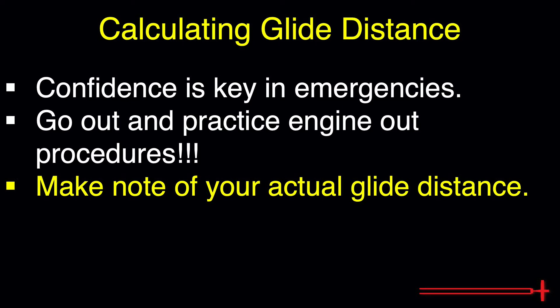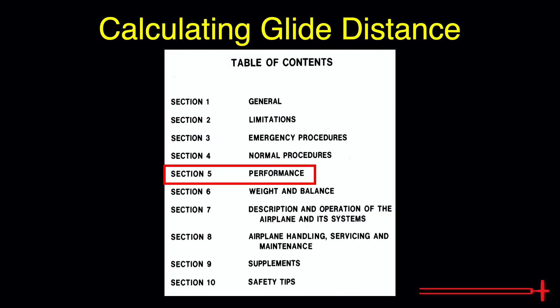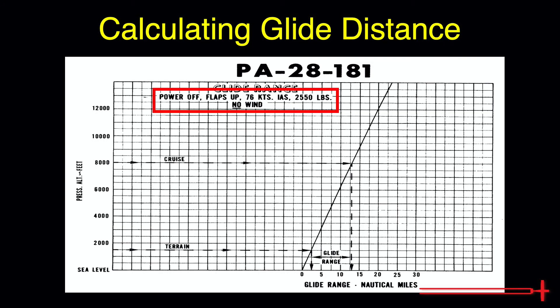To get an idea of what kind of glide distance we can expect, let's look in our aircraft's POH. Open to the table of contents and locate the performance section. Turn to the performance section table of contents and look for the glide range chart. We should read the notes before using the chart.